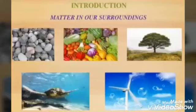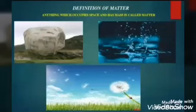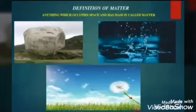Emotions do not occupy any space and have no mass. So the definition of matter is: anything which occupies space and has mass is called matter. We see pictures here — a stone in solid state, water, and air molecules. All of these occupy some space and have some mass, so we call them matter.